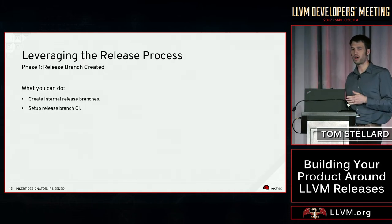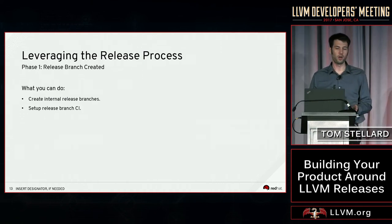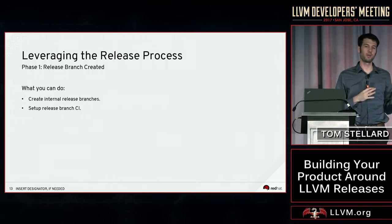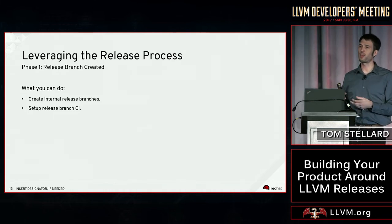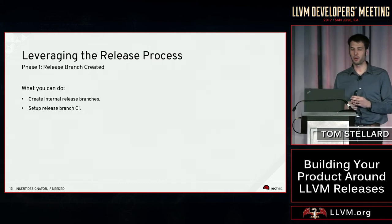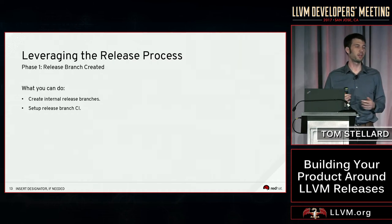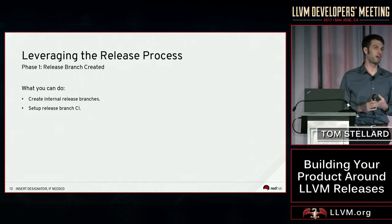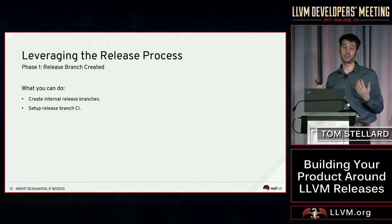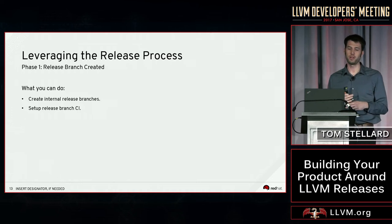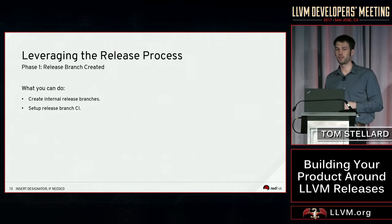During phase one, this is a good time to create any internal release branches you want. Instead of tracking master, you'll now be tracking the upstream release branch. Even if you don't think you'll have any extra commits beyond what's in the upstream branch, it's still a good idea — it can speed up CI clone times if you're running a lot of tests, and gives you flexibility to pull in a patch that can't get upstream. Make sure your CI is enabled on your internal release branch.